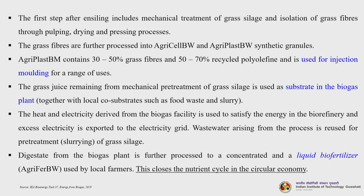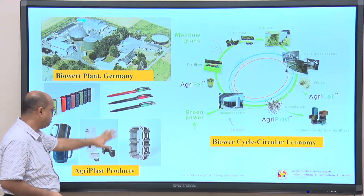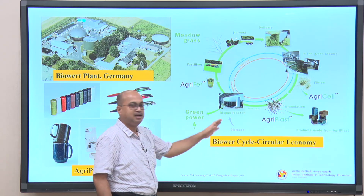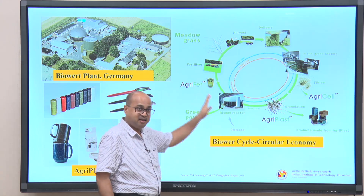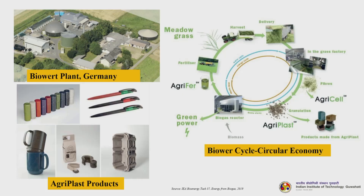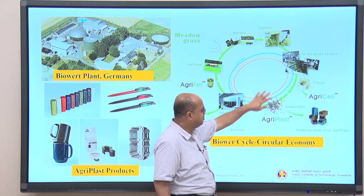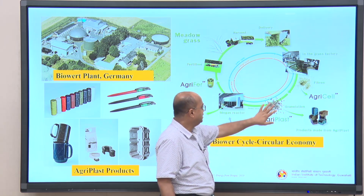Wastewater arising from the process is reused for pretreatment. Digestate from the biogas plant is further processed into a concentrated liquid biofertilizer used by local farmers. This closes the nutrient cycle in the circular economy. Looking closely at this plant, the aerial view shows the different Agri-based products. The BioWatt cycle illustrates the circular economy concept with complete nutrient recycling: starting from meadow grass — harvested, delivered, then processed in the grass factory. The solid parts go to fibre product production as Agri-Cell; other products are granulated into Agri-Plast.